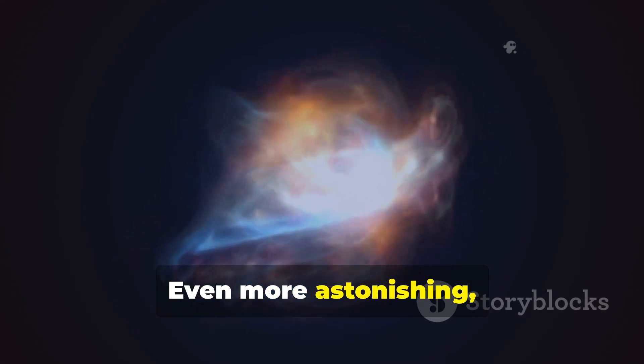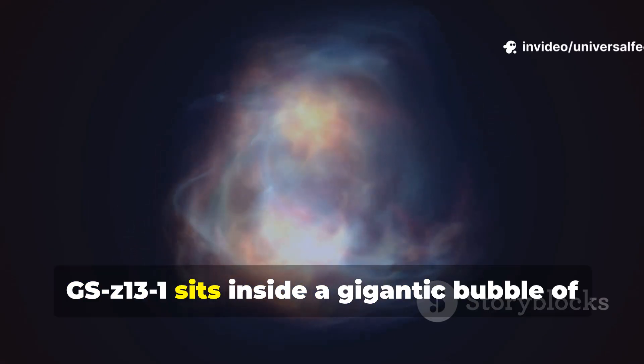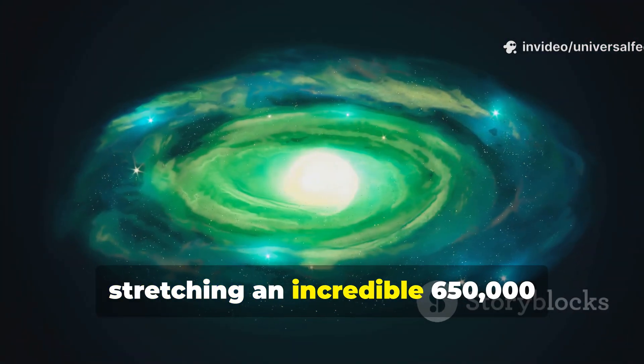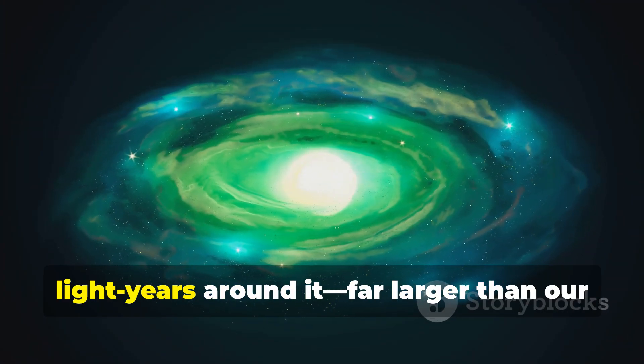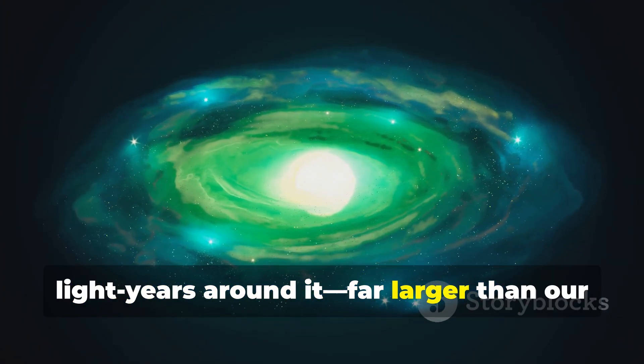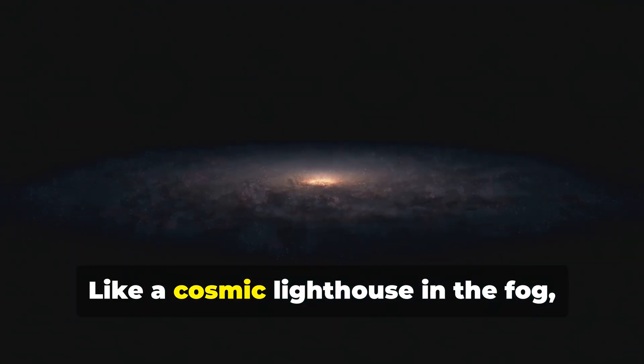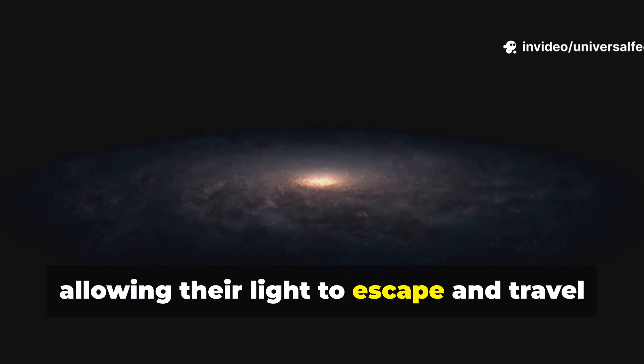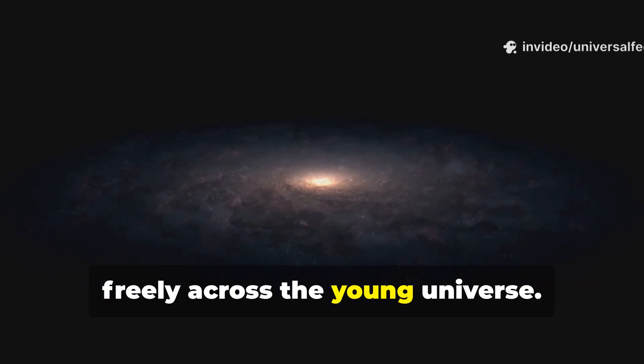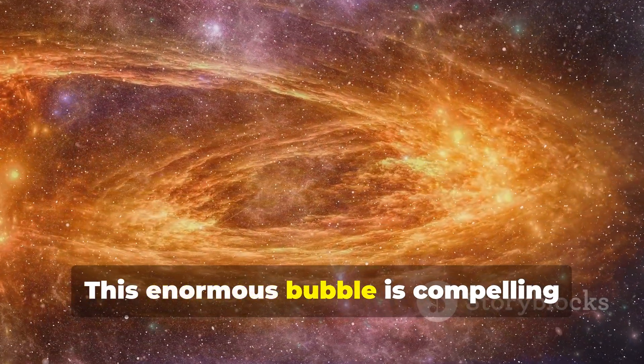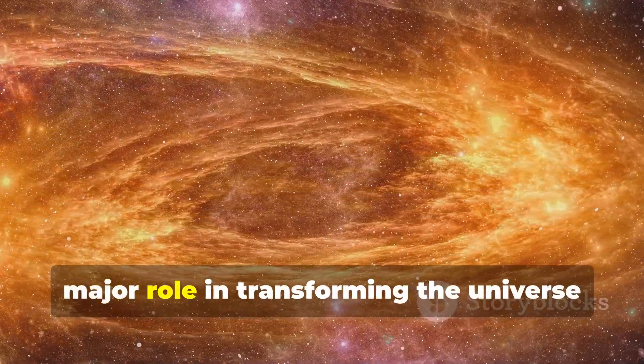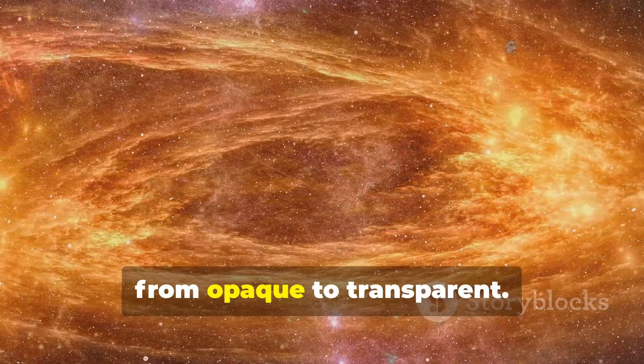Even more astonishing, GS-z13-1 sits inside a gigantic bubble of transparent plasma, stretching an incredible 650,000 light-years around it, far larger than our own Milky Way. Like a cosmic lighthouse in the fog, its energetic stars carved a massive clearing, allowing their light to escape and travel freely across the young universe. This enormous bubble is compelling evidence that this tiny galaxy played a major role in transforming the universe from opaque to transparent.